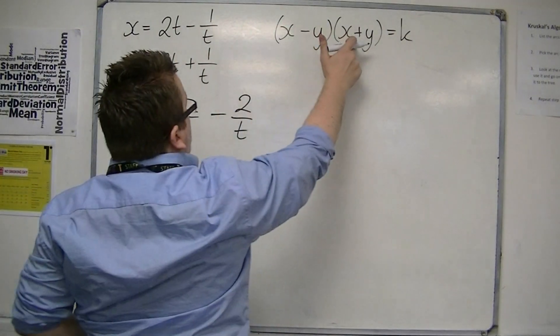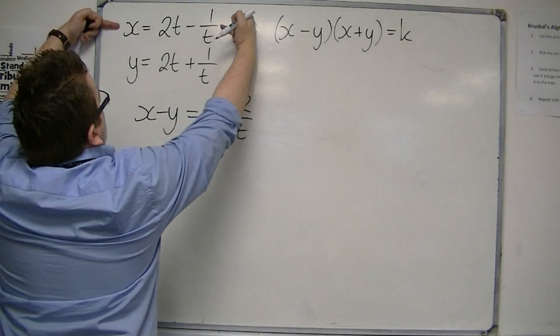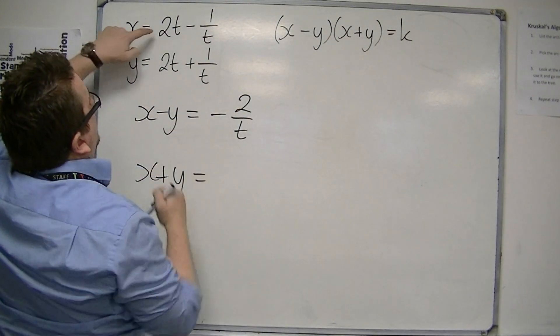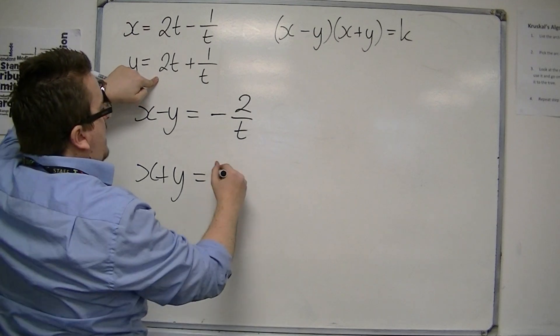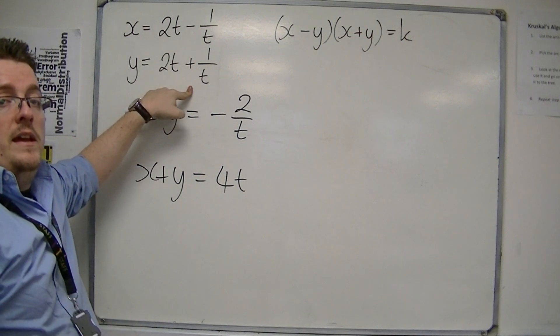I also need to find x plus y, so x plus y is this equation plus this equation. So 2t plus 2t is 4t, minus 1 over t plus 1 over t is 0.